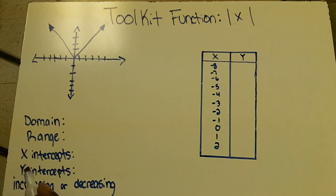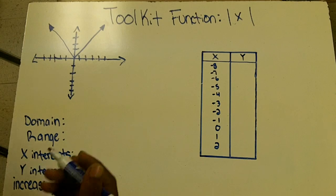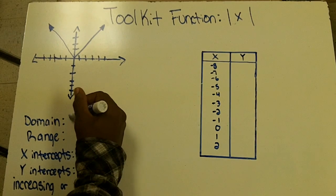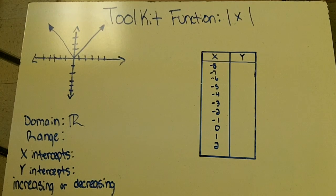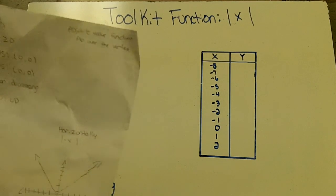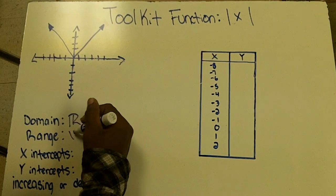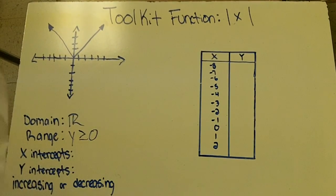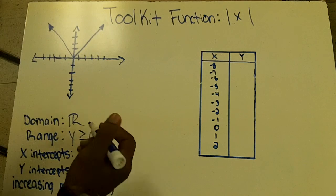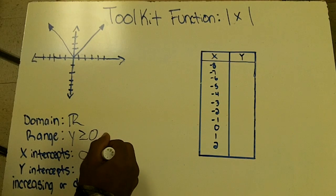The domain is all real numbers, which you write as R with two lines. The range is y is greater than or equal to zero. Then the x-intercept coordinates are zero, zero.